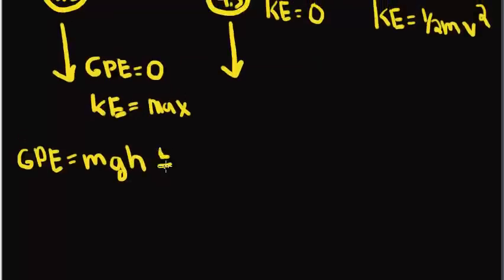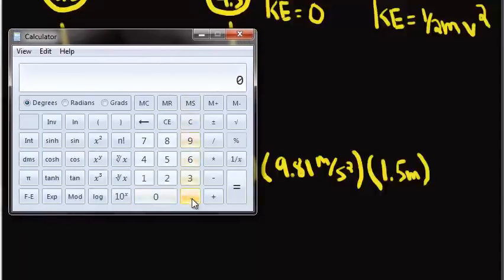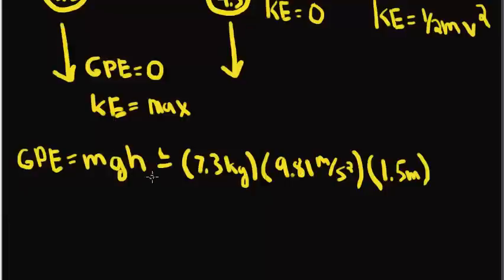Now, for the heavier bowling ball, this will equal 7.3 kilograms times gravity, which is the constant of 9.81 meters per second squared, times the height, which at the top is 1.5 meters. And we can plug these values into our calculator and we get as an answer 107.42 joules.